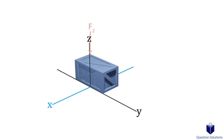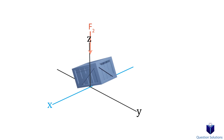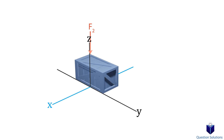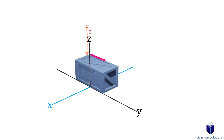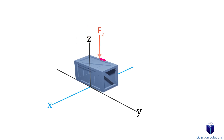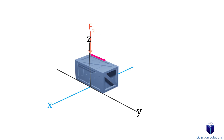Now if we look at force F2 and apply it, we see that it would turn the box. That moment is force F2 times the perpendicular distance. Again, if we move this force along the left edge the moment will be the same, but if we move it along the right edge the moment created would change, because moving it along the right edge changes the perpendicular distance to the x-axis.